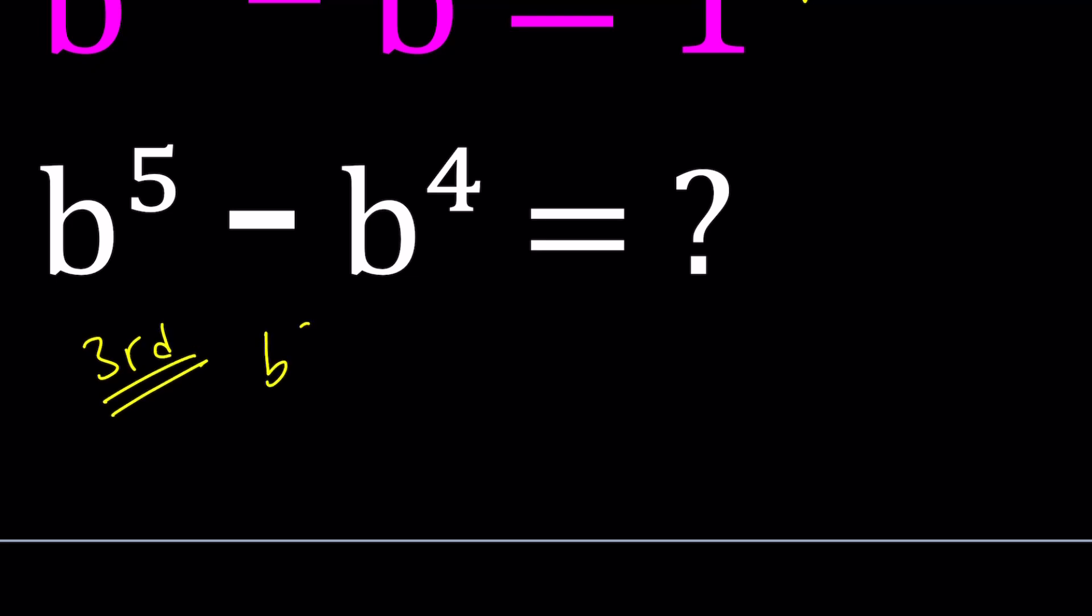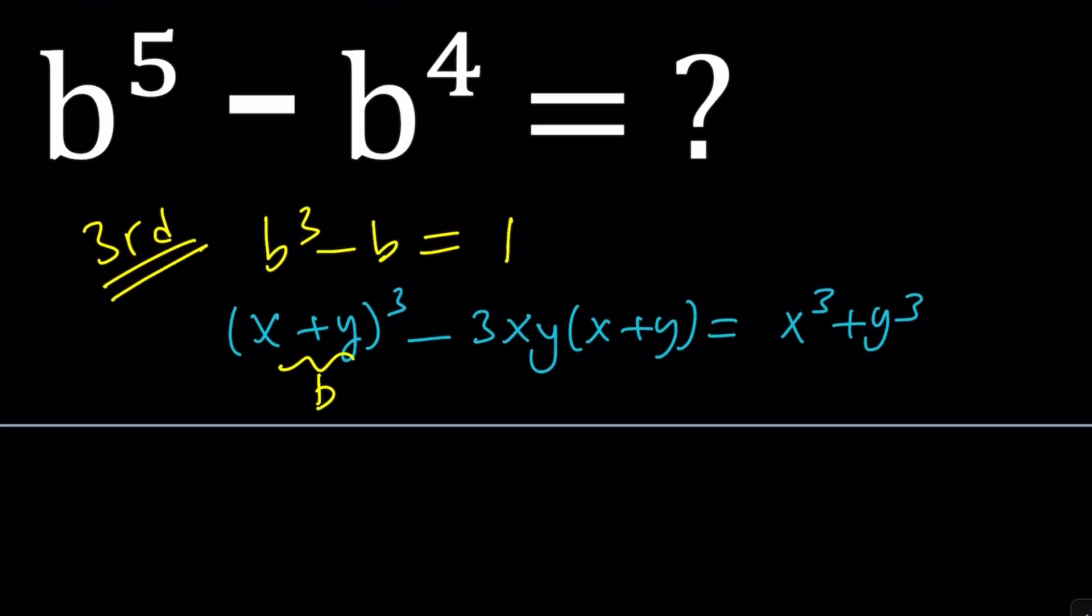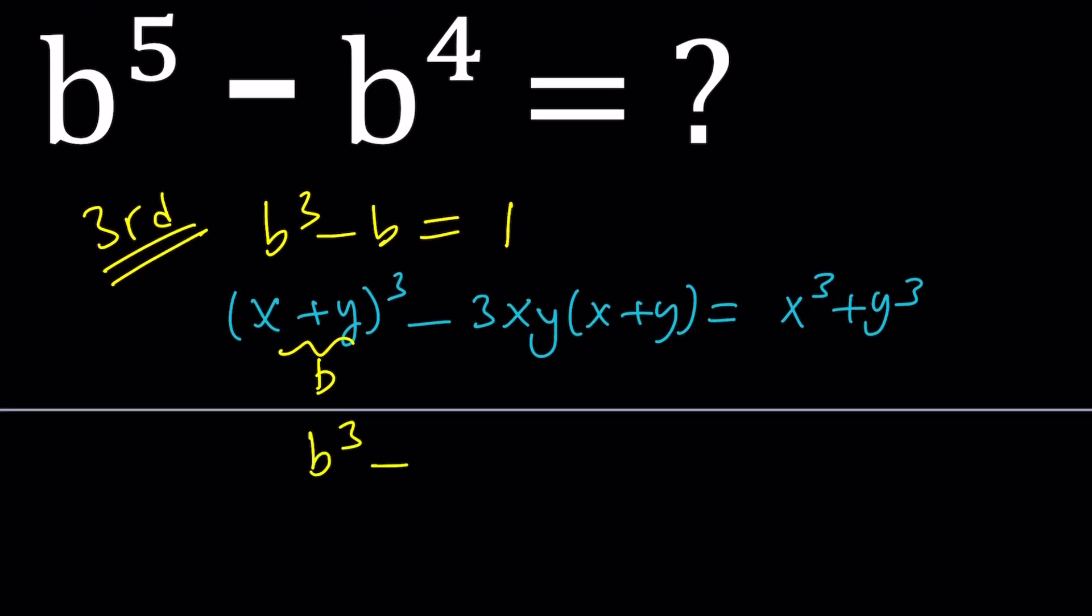So start with b cubed minus b equals 1, and then we're going to use the cubic formula, right? Because we don't have a b squared, so that's kind of nice. Let's write down this identity: x plus y cubed minus 3xy times x plus y equals x cubed plus y cubed. Now if you replace x plus y with b, you're going to get b cubed minus 3xy b equals x cubed plus y cubed.